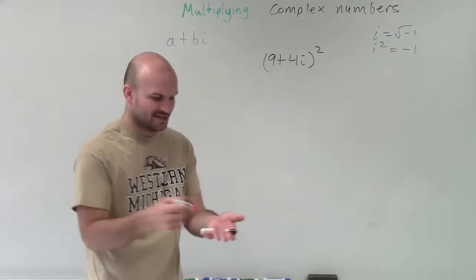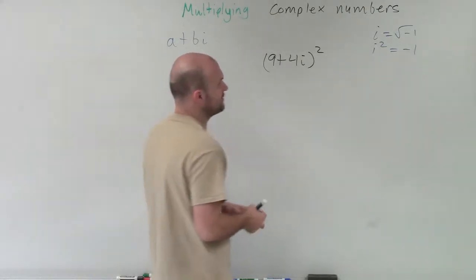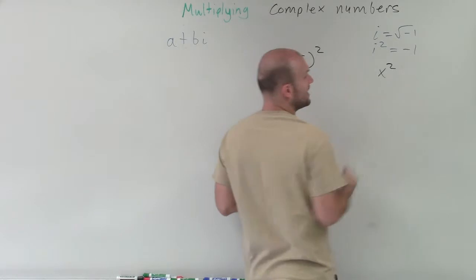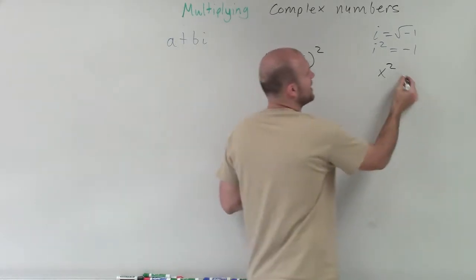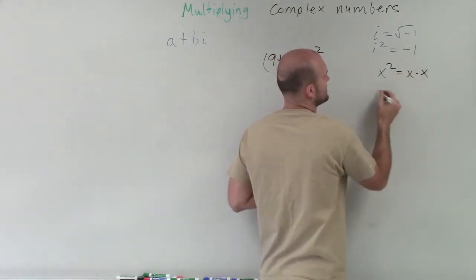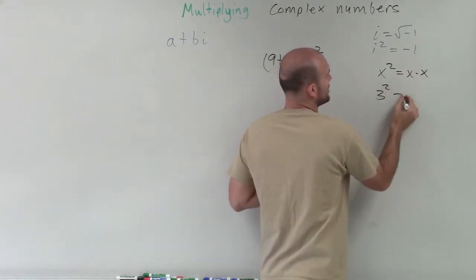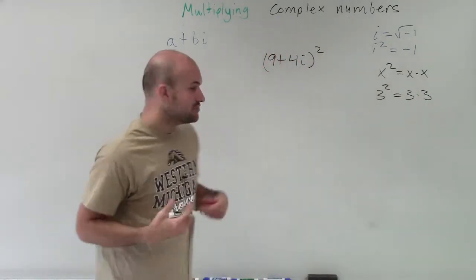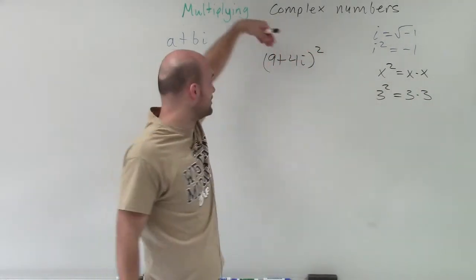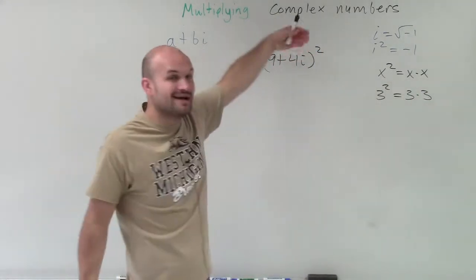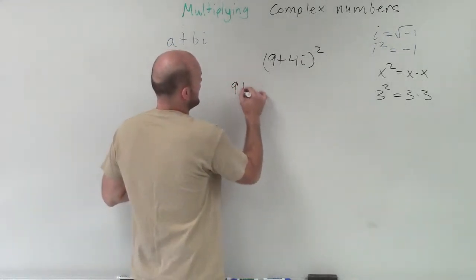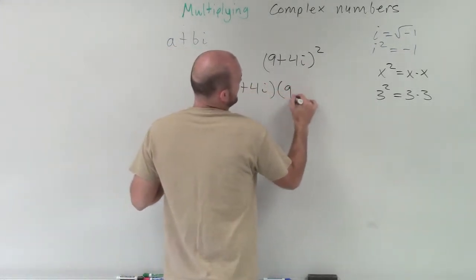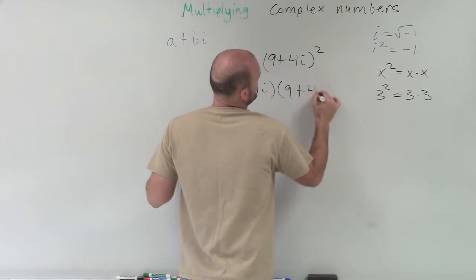We need to look at what exactly the squaring of a number represents. Let's think about x squared. If I have x squared, that represents x times x. 3 squared represents 3 times 3. So that's the exact same thing with this binomial: 9 plus 4i squared represents 9 plus 4i times 9 plus 4i.